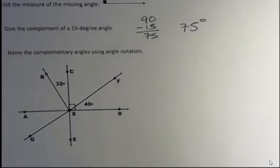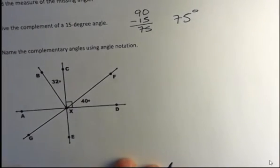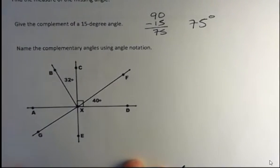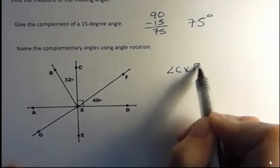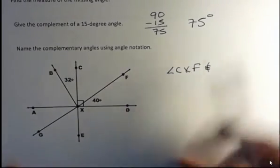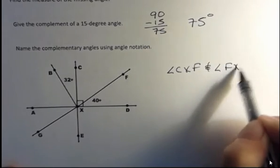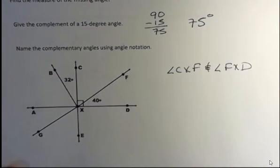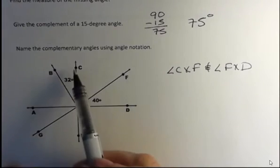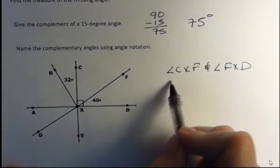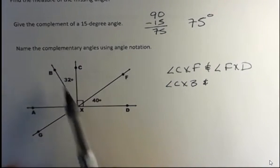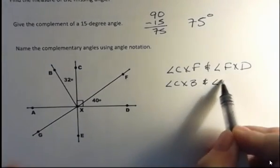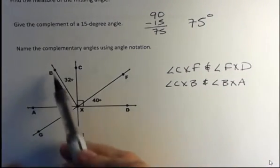And finally, name the complementary angles using this notation. We don't have to name them all, but just a couple. One of the complementary angle pairs I can see is angle CXF and angle FXD. Right? What's another pair? Well, maybe you can see there's several in here. I'm going to do the next one I see is angle CXB. Which one is that complementary to? Well, it's complementary to angle BXA.